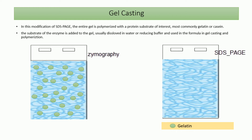Gel casting is the first step of protein electrophoresis. In SDS-PAGE we prepare polyacrylamide gel in two different concentrations and two different pH buffers for the resolving and stacking gels. The same applies to zymography, but we add the substrate of the enzyme of interest to the resolving gel — this substrate may be added to the water used in the resolving gel formula.